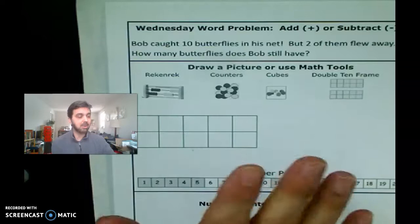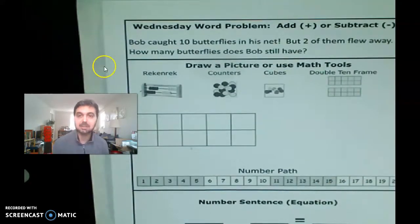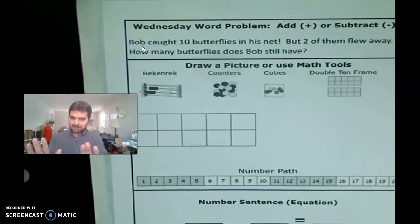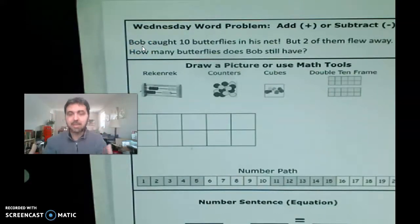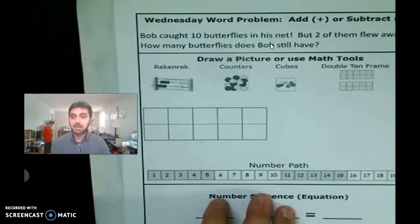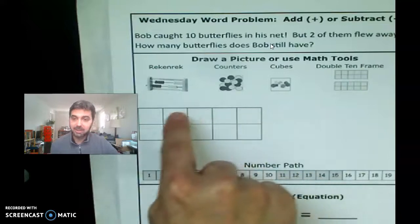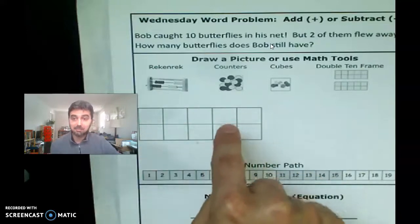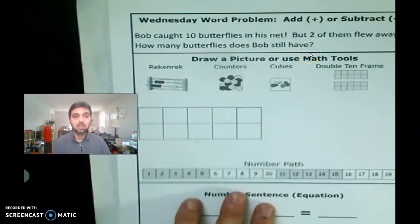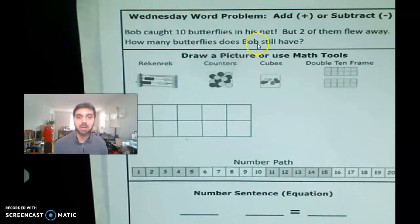All right, so you should have your problem out. I'm going to read it and then we're going to discuss it. Okay, so it says Bob, actually wait, we're going to read it and then you're going to do it and then we're going to discuss it. Okay, we've got that important part. Bob caught 10 butterflies in his net. All right, so that means he filled it up, right? If this is our butterfly net, there's 10 butterflies that can fit in there. He caught 10 of them. Great. But two of them flew away. How many butterflies does Bob still have?